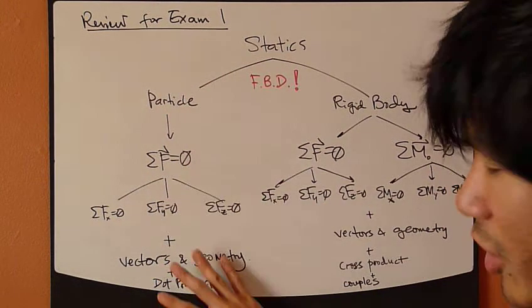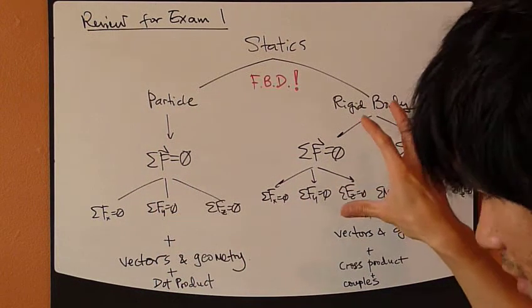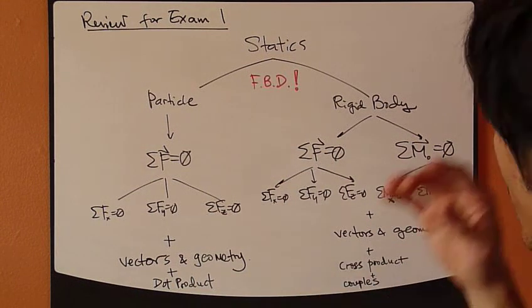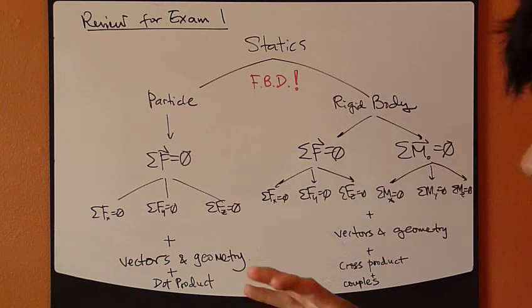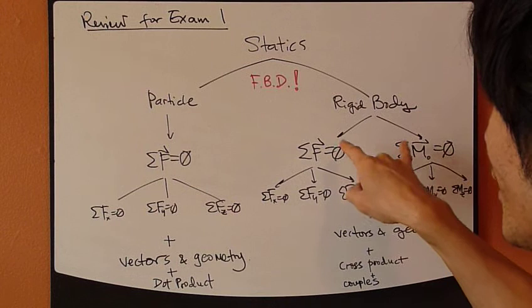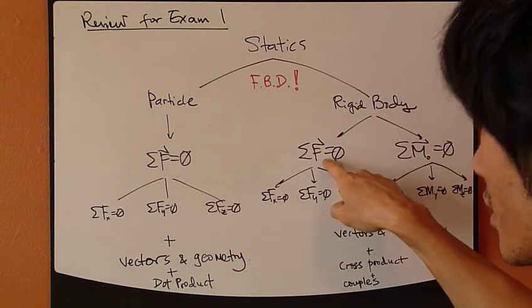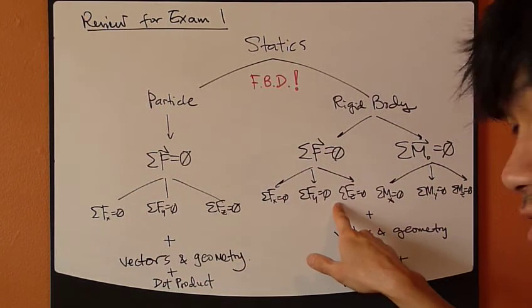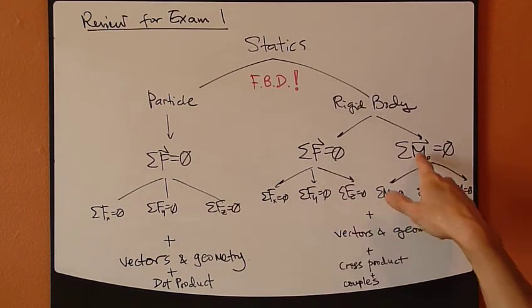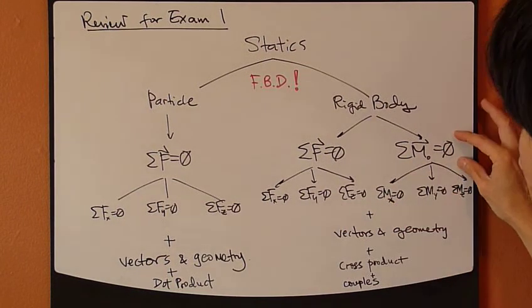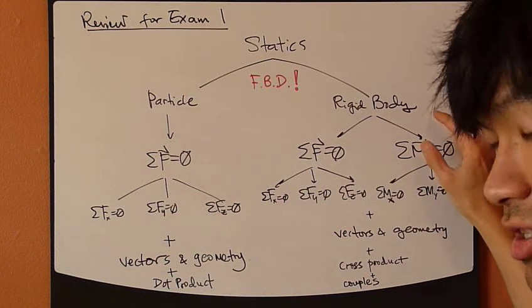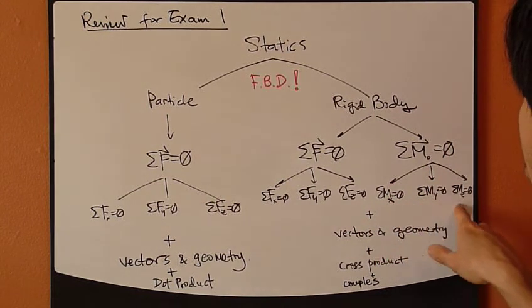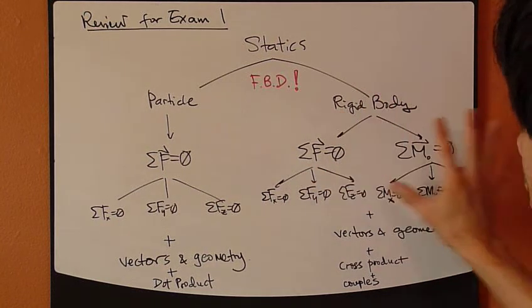So, this is quite straightforward, but this lays the foundation for rigid body. Now, rigid body involves rotation or tendency to rotate. So, in order for a rigid body to be in equilibrium, it must satisfy two equations now. Sum of forces as well as sum of moments. Sum forces just as particles. So, we can have three components in three-dimensional space. And in three-dimensional space, then you can take moments about each of the principal axes, x, y, z axes.